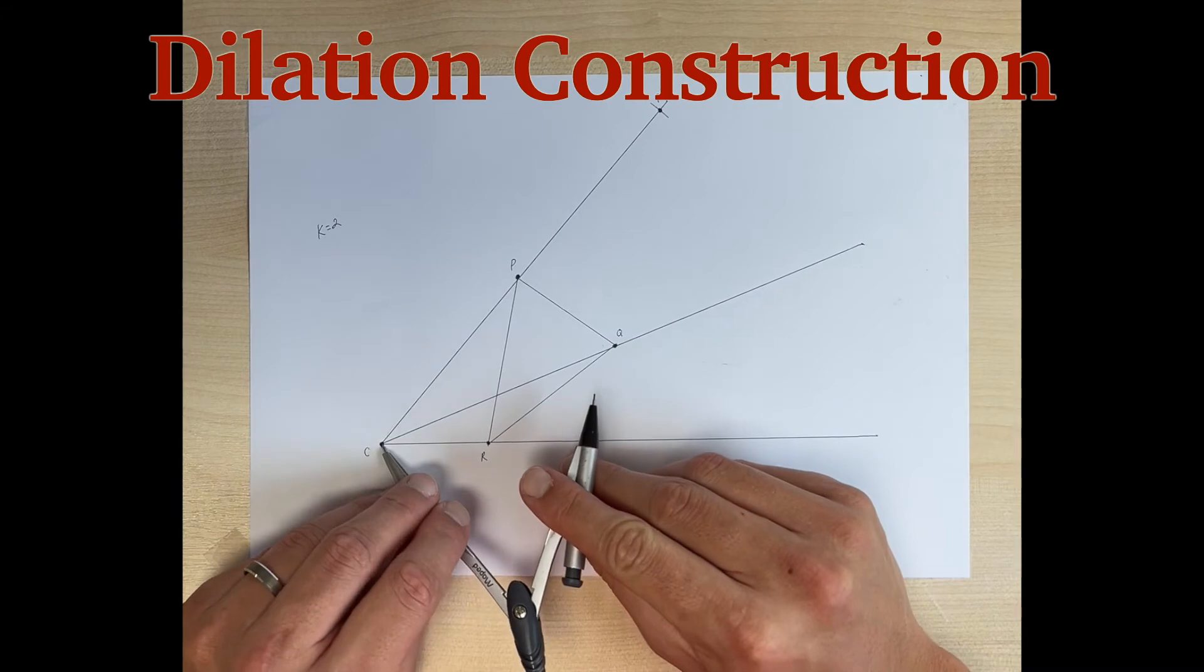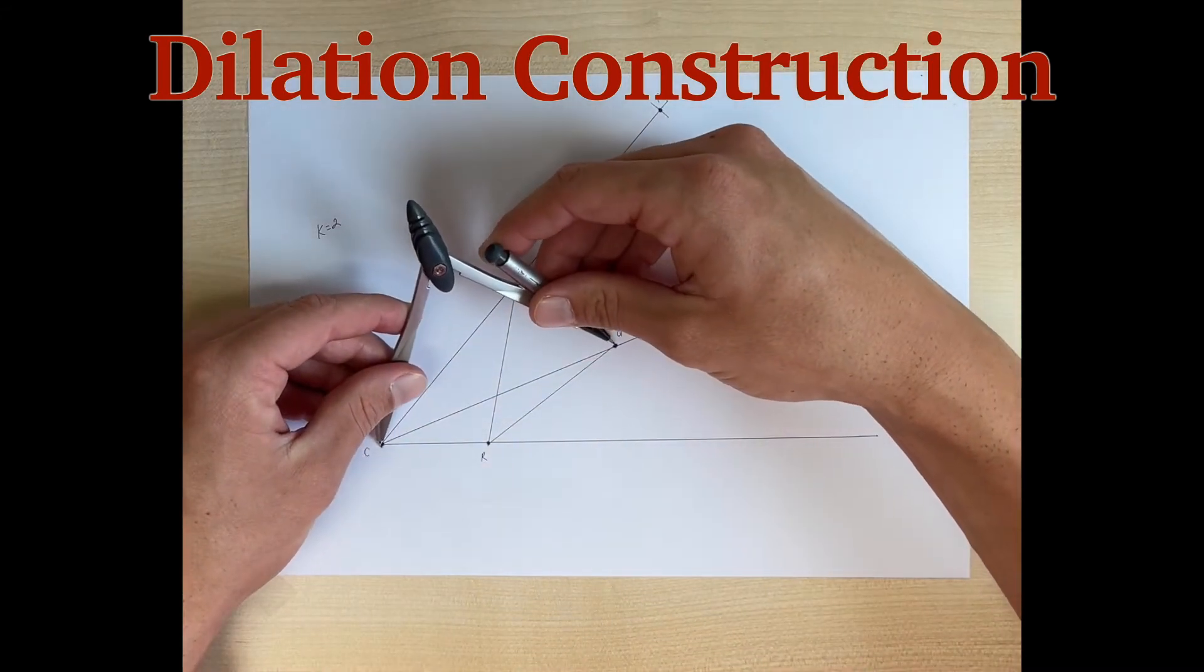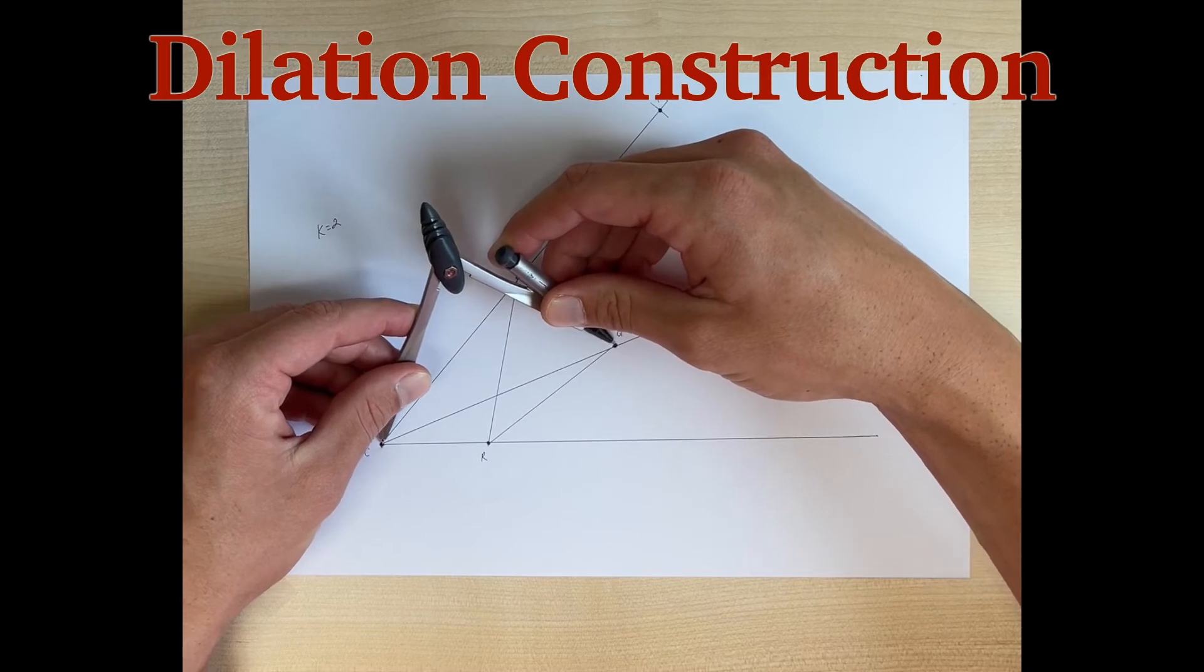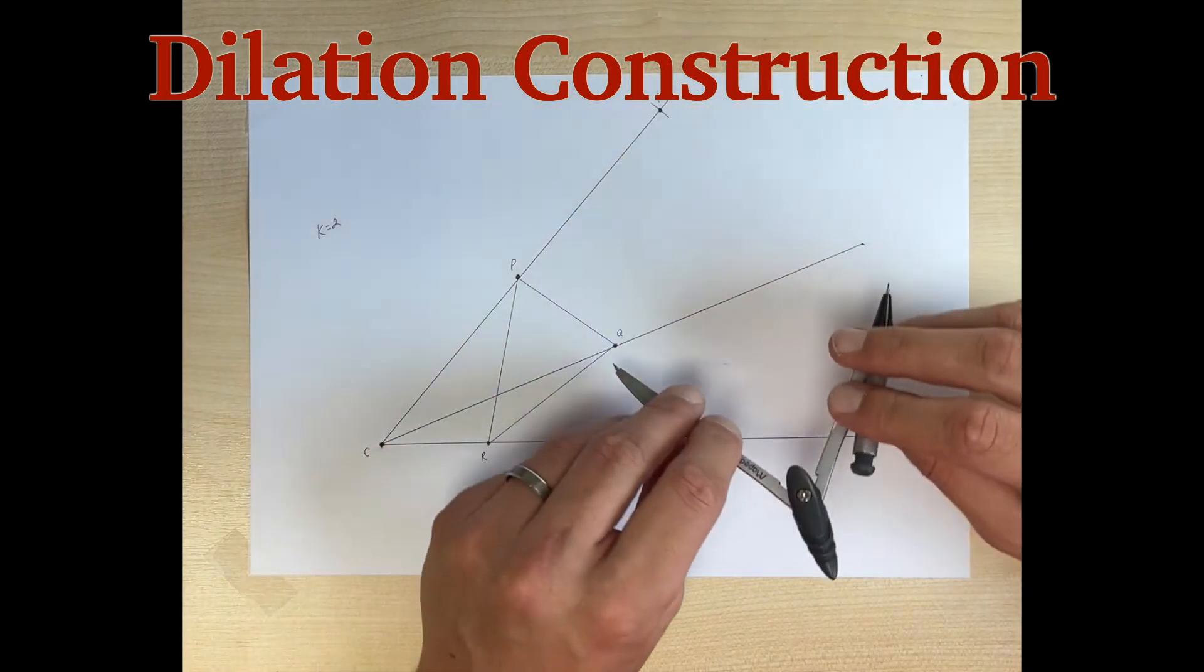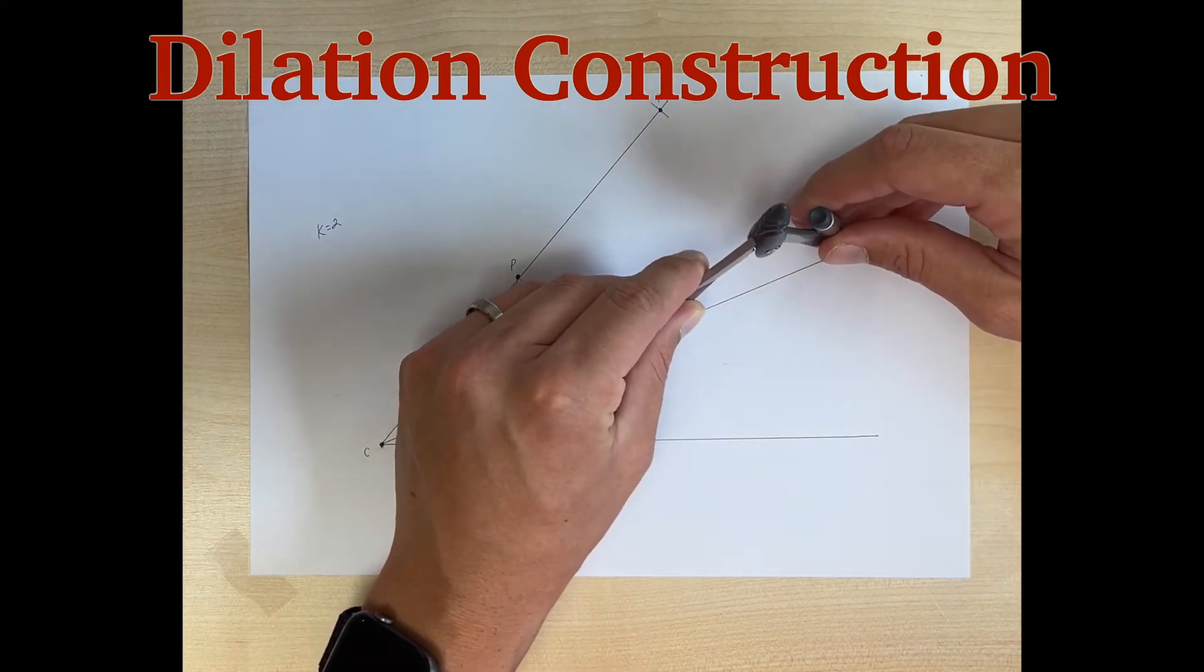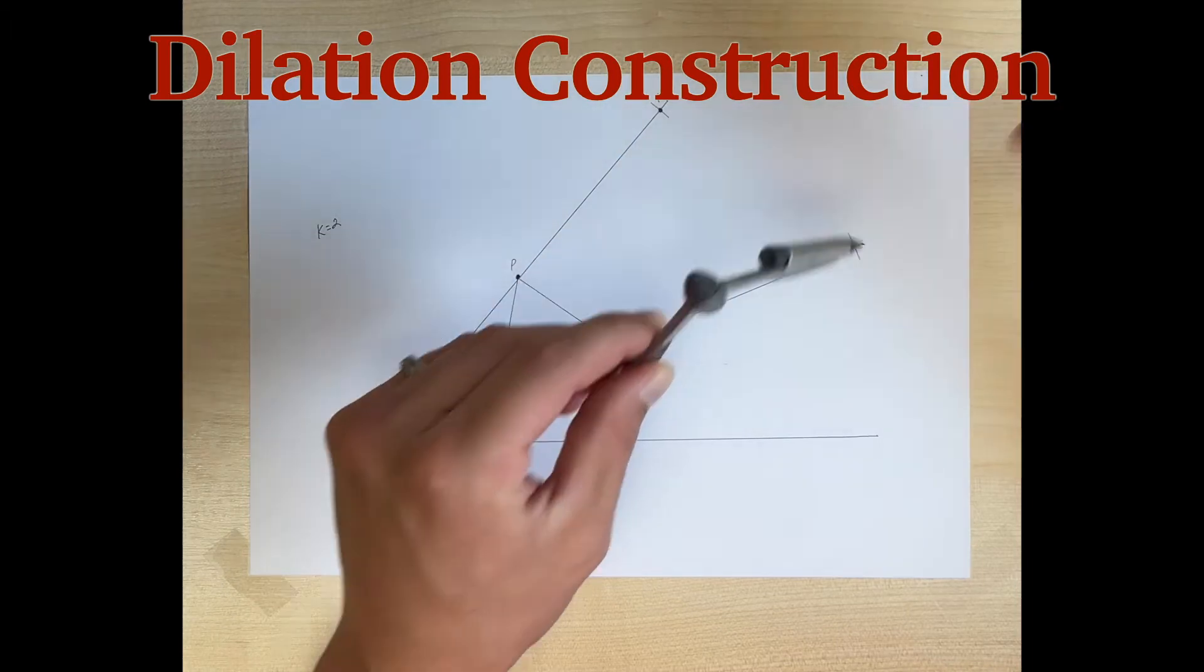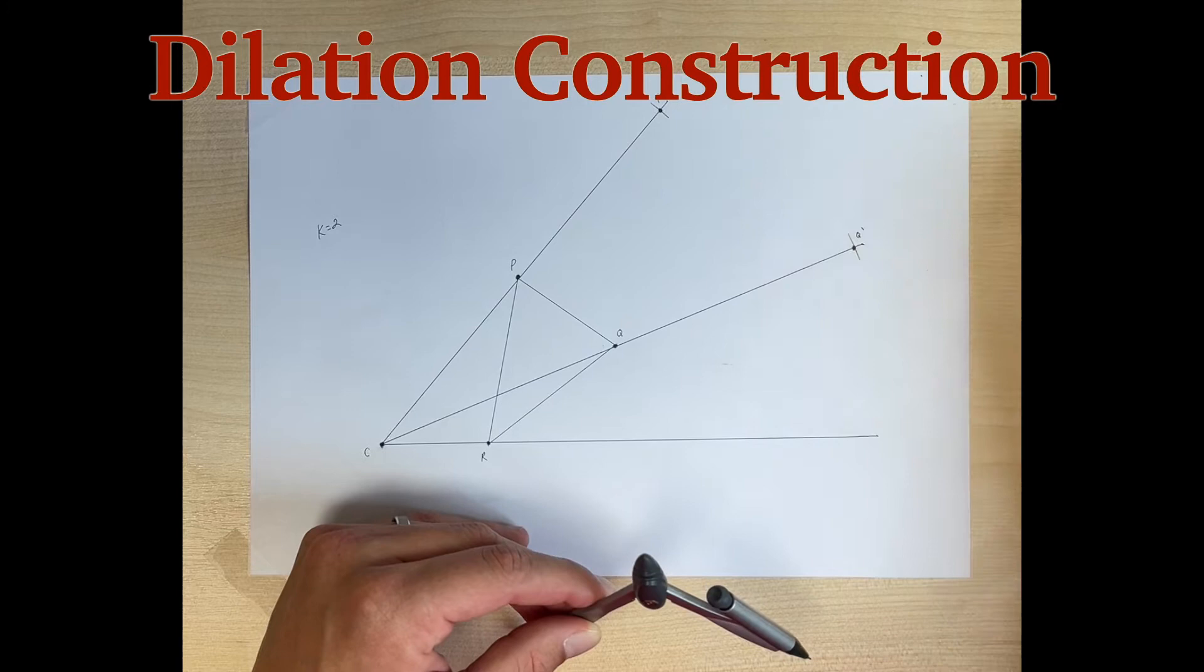Now we're going to measure the distance from C to Q. Just a little bit wider. C to Q. Good. Now we're going to take that distance, put the needle on Q, and make just a little arc out here. Now we can put a vertex there and call that Q prime.